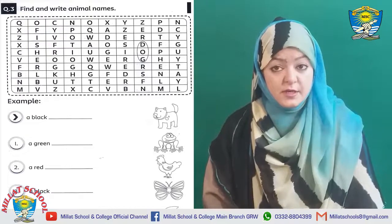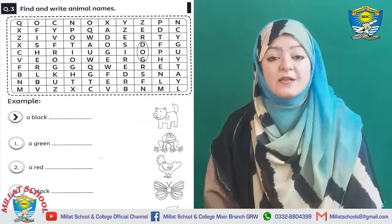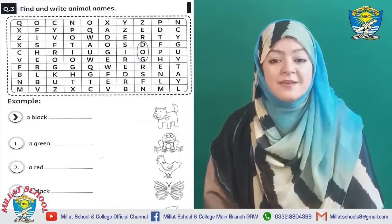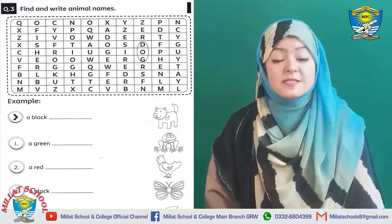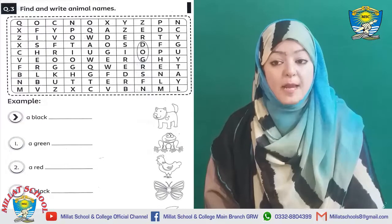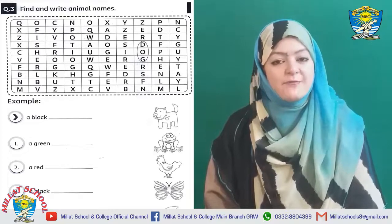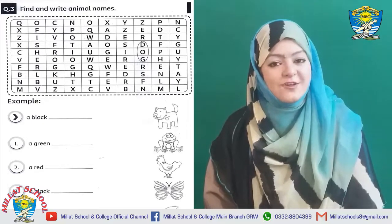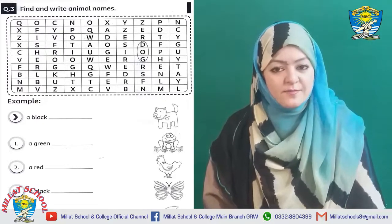Question number 3 is: find and write animal's name. On this page at the bottom we can see the example — a black dog. There is a picture of a dog. They have already circled 'dog' and you will write 'dog' here.